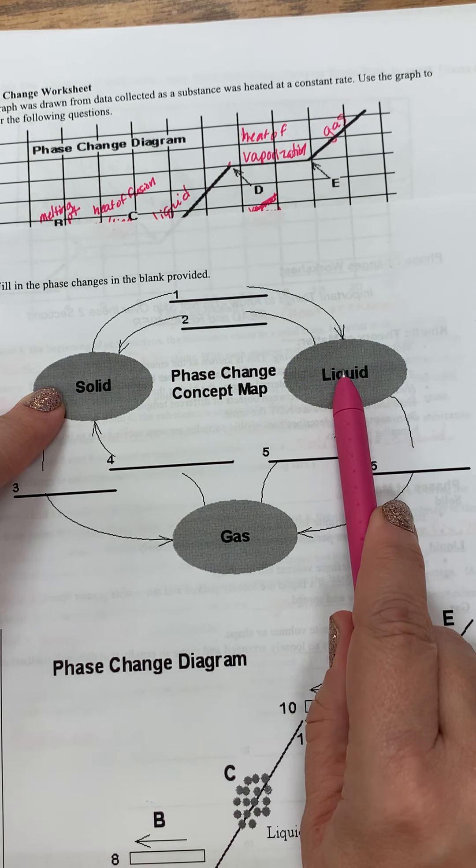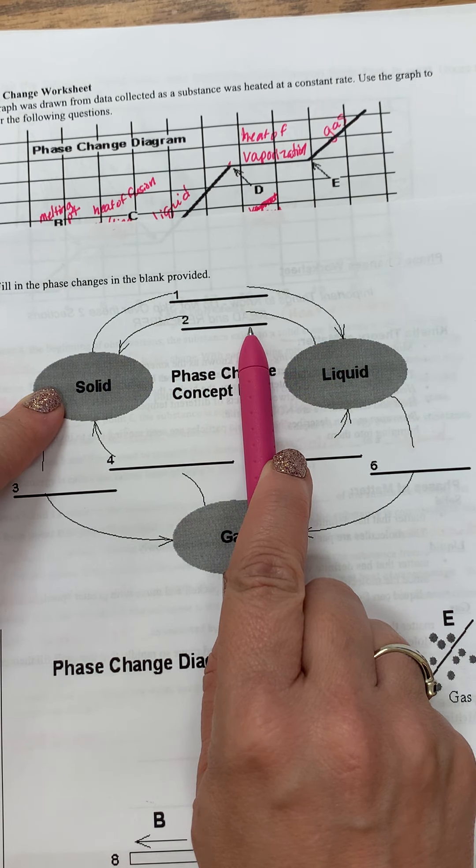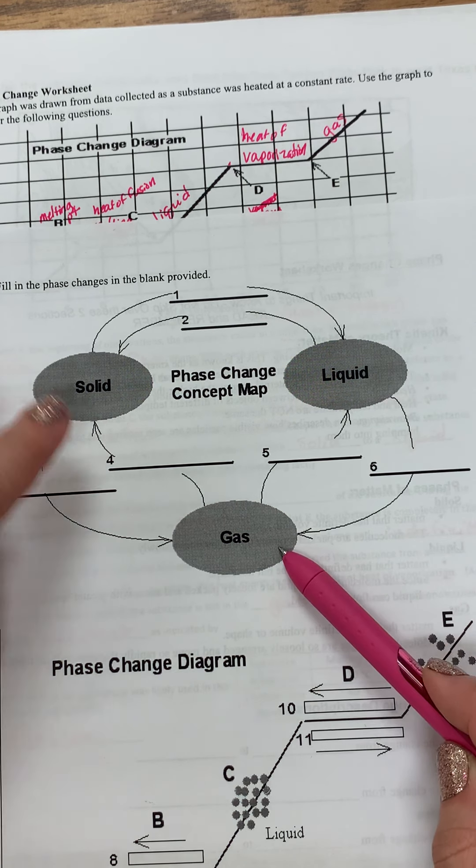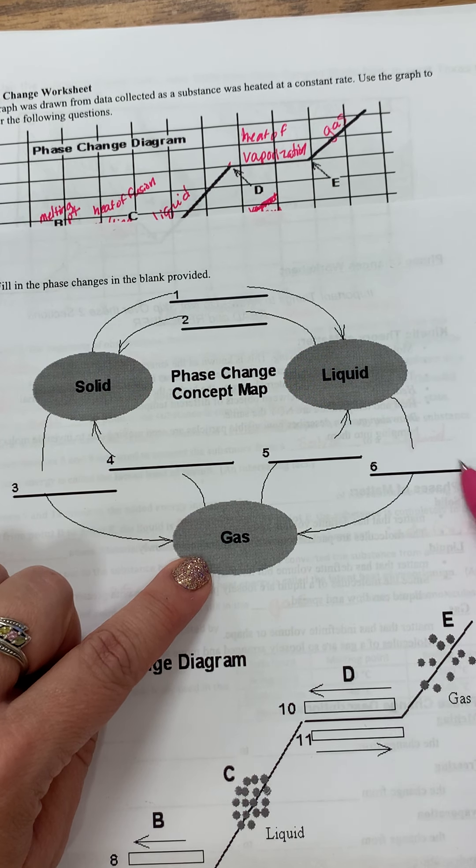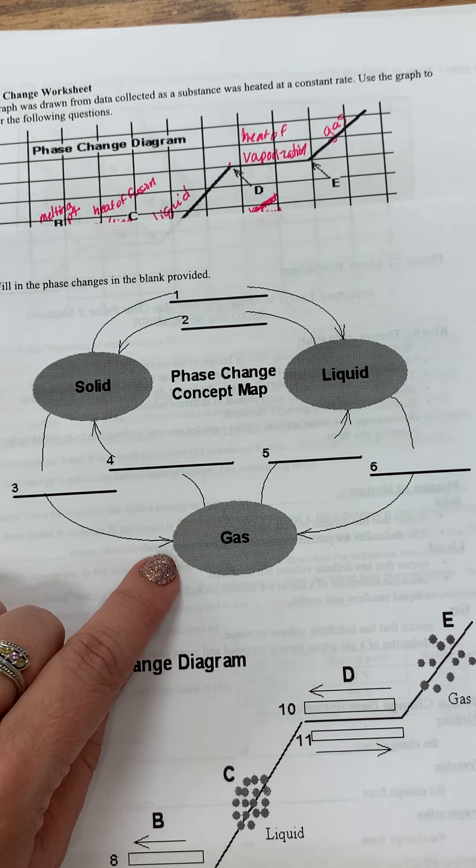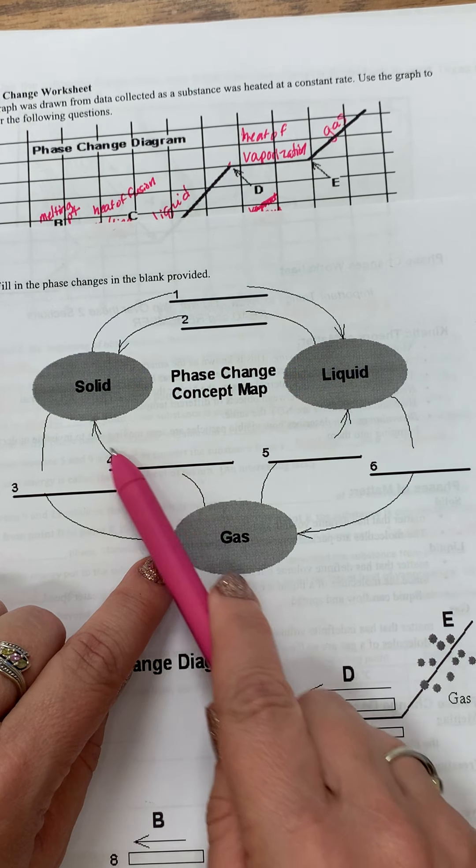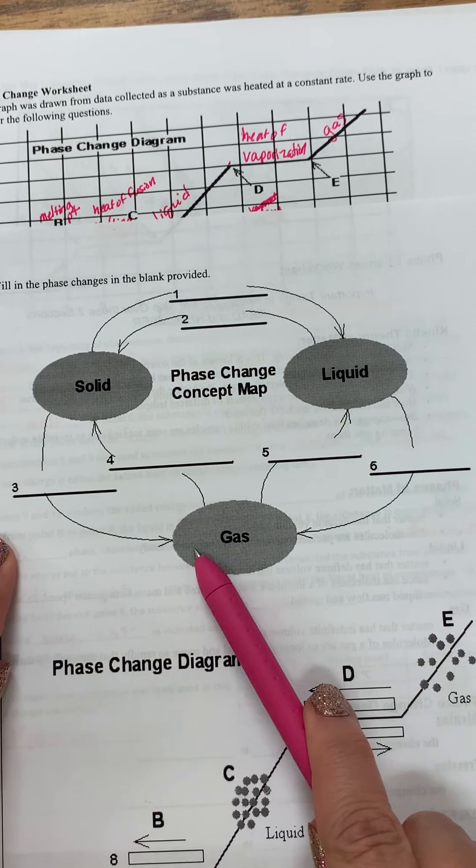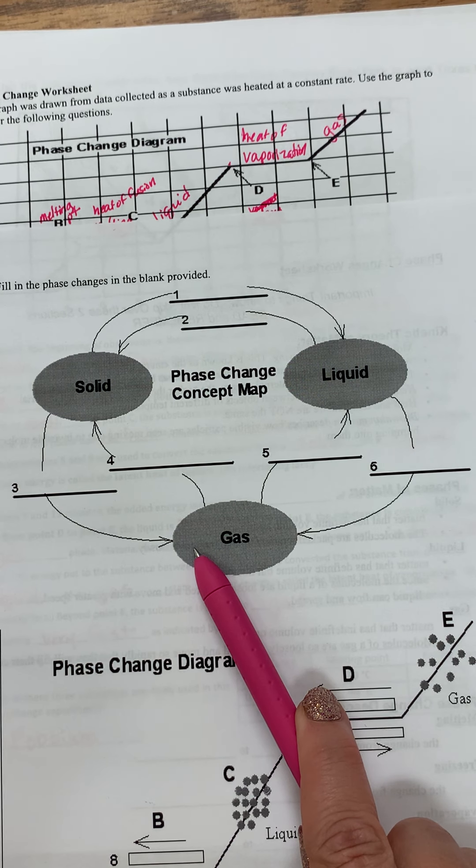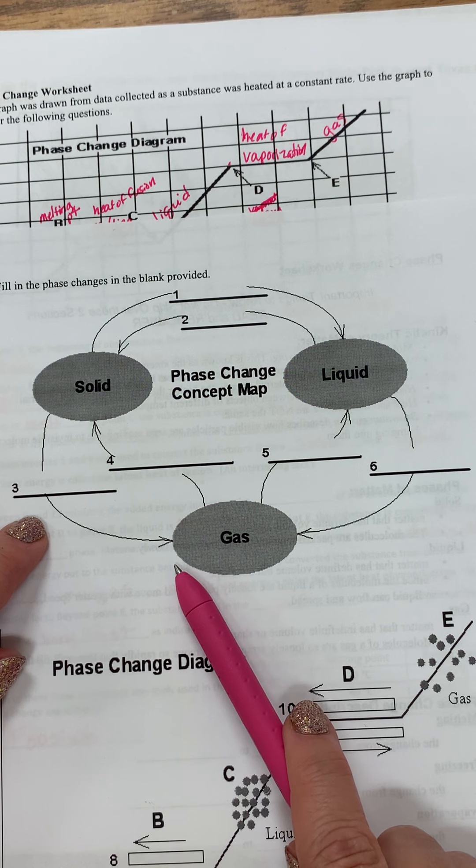When a solid goes to a liquid, what do we call that? If a liquid goes to a solid, what do we call that process? If a liquid goes to a gas, what do we call that process? If a gas goes to a liquid. Now four and five, you may have to look up because it may not have been in the video that I posted or it wasn't in what I had talked about. If you have a gas and it goes back to a solid or a solid that goes directly to a gas.